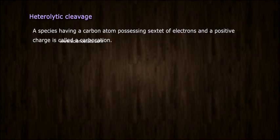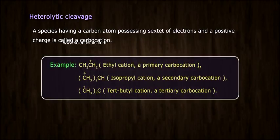A species having a carbon atom possessing 6 electrons and a positive charge is called a carbocation. Example: Ethyl cation, a primary carbocation. Isopropyl cation, a secondary carbocation. Tertiary butyl cation, a tertiary carbocation.